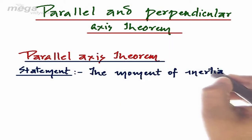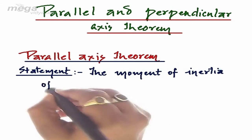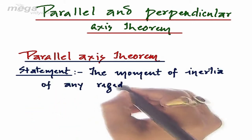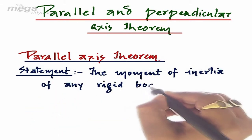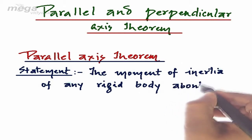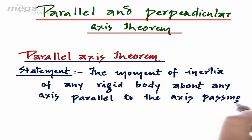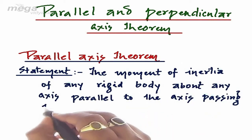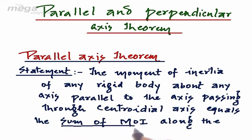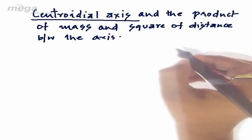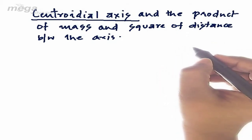According to Parallel Axis theorem, the moment of inertia of any rigid body about any axis parallel to the axis passing through the centroidal axis — that is the axis passing through the center and perpendicular to the plane — equals the sum of moment of inertia along the centroidal axis and the product of mass and square of distance between the axes.